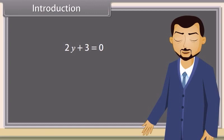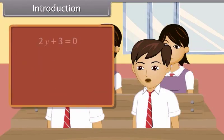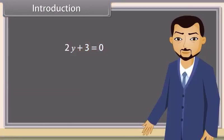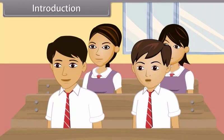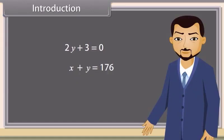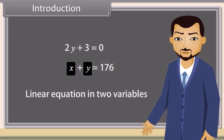Can you solve this equation? Yes, this is so easy. Now tell me which equation is this? This is also a linear equation. Yes, this is also a linear equation, but it has two variables, X and Y. So it is called a linear equation in two variables.